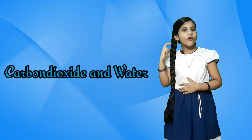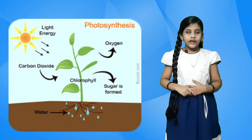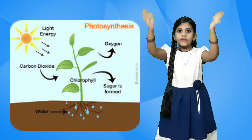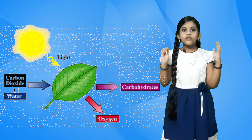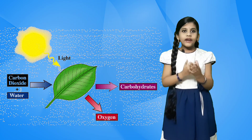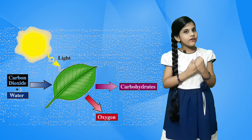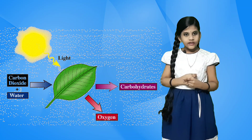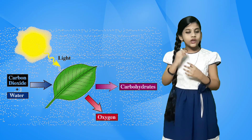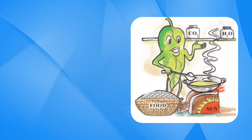Carbon dioxide and water. Plants take carbon dioxide from the air and water from the soil. Plants use carbon dioxide, water, sunlight, and chlorophyll to make food. This process is known as photosynthesis.